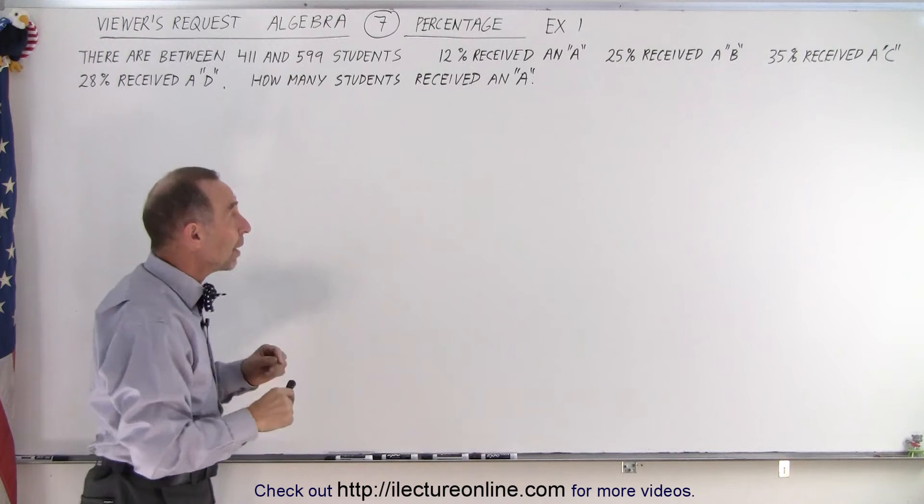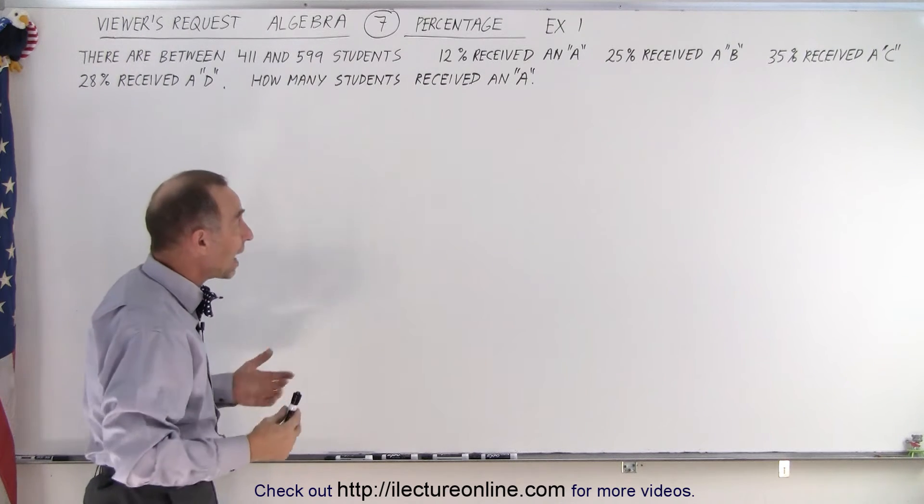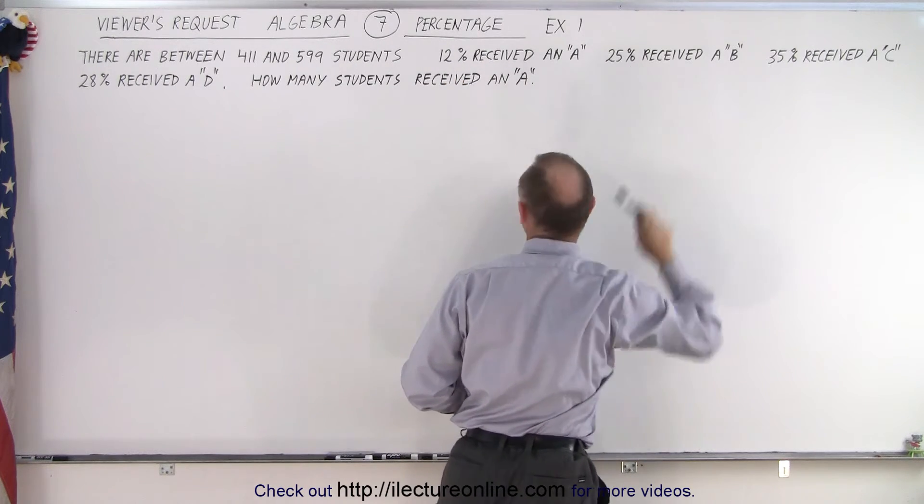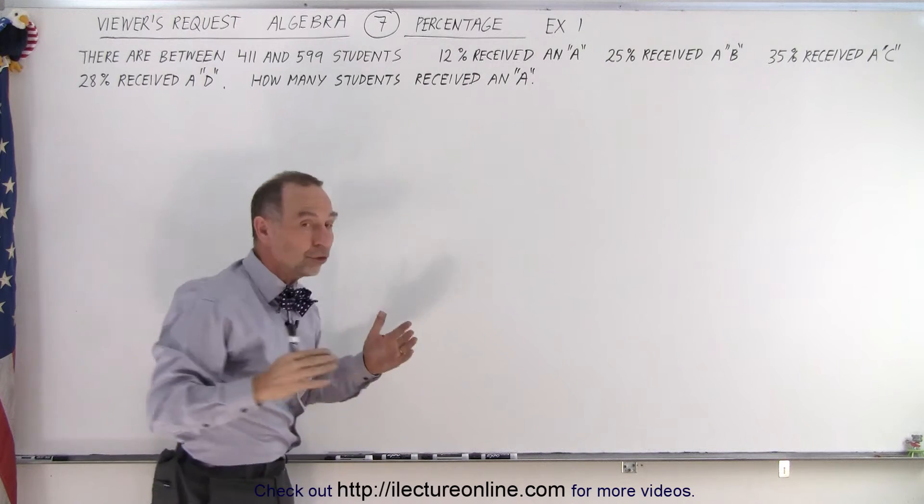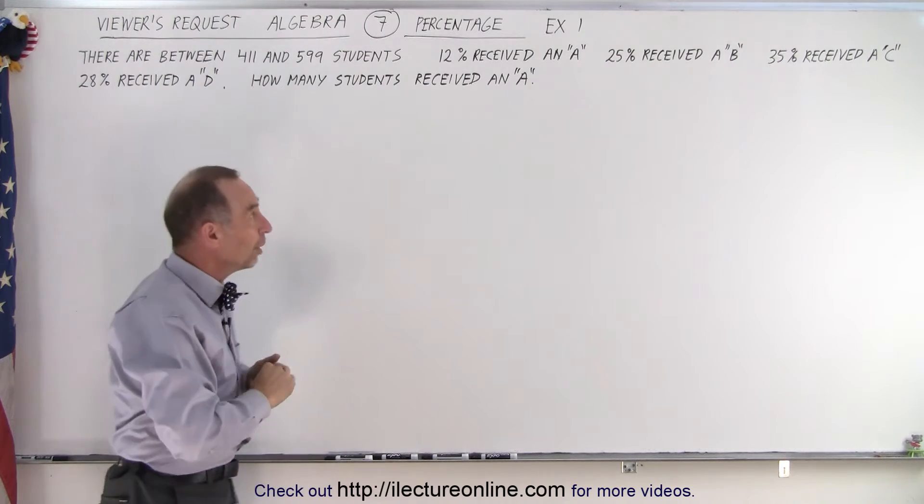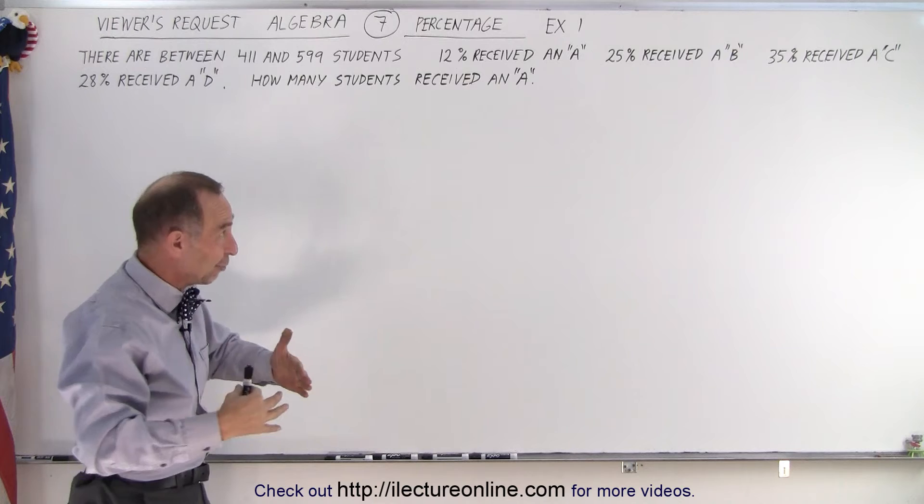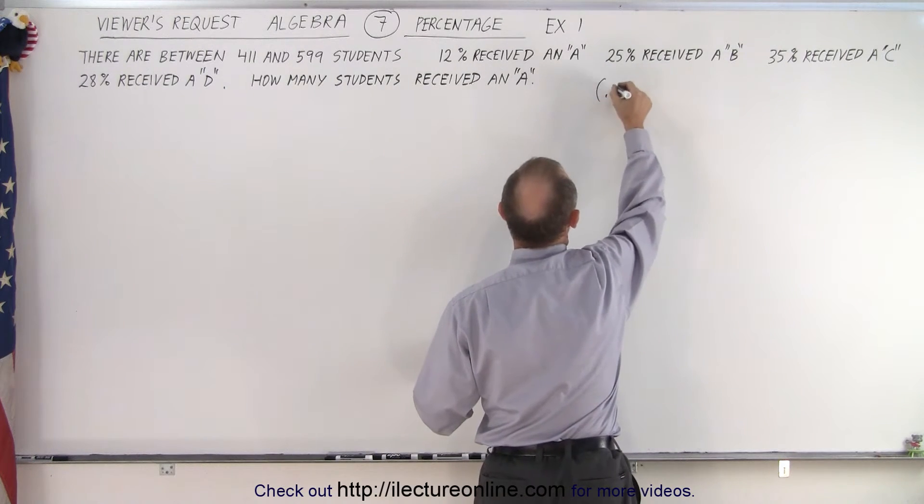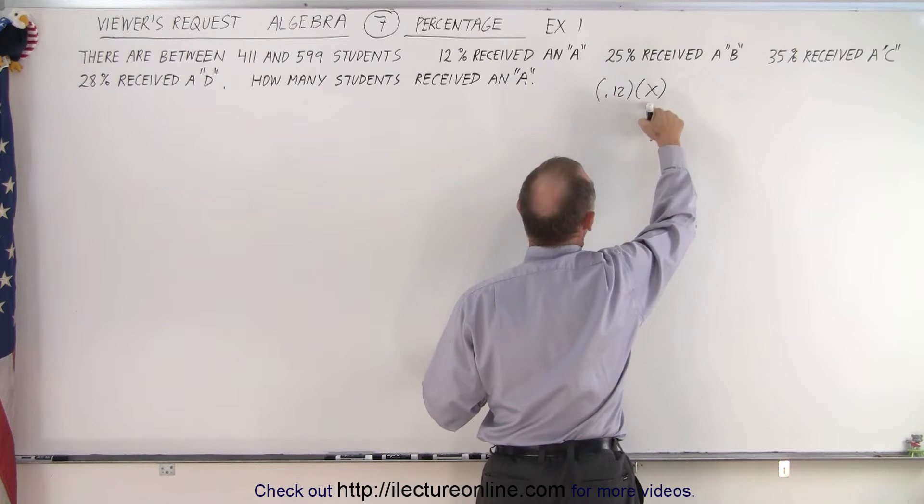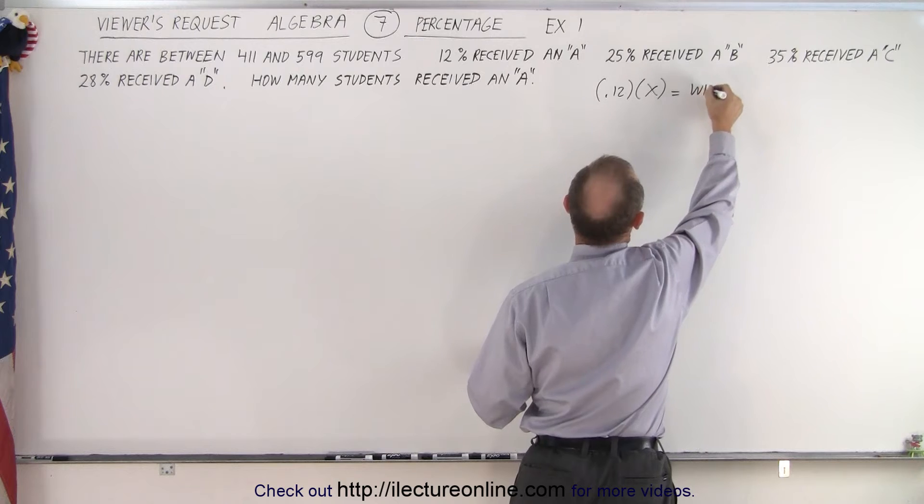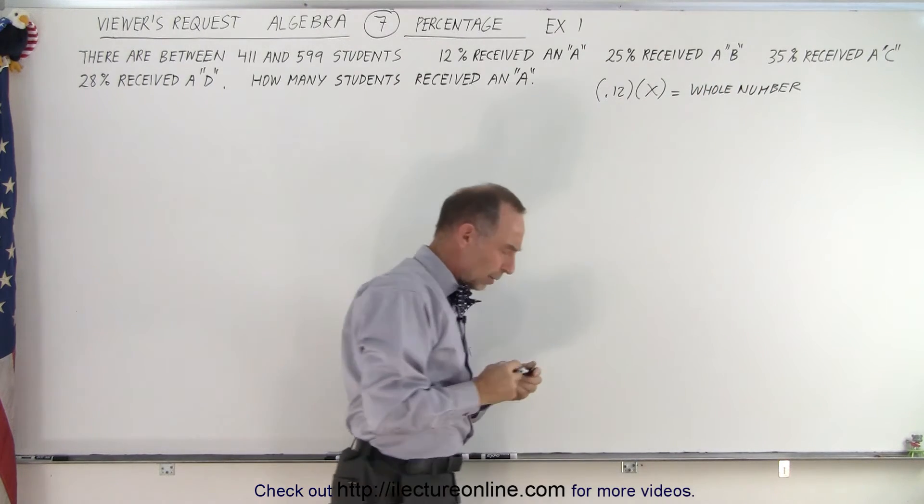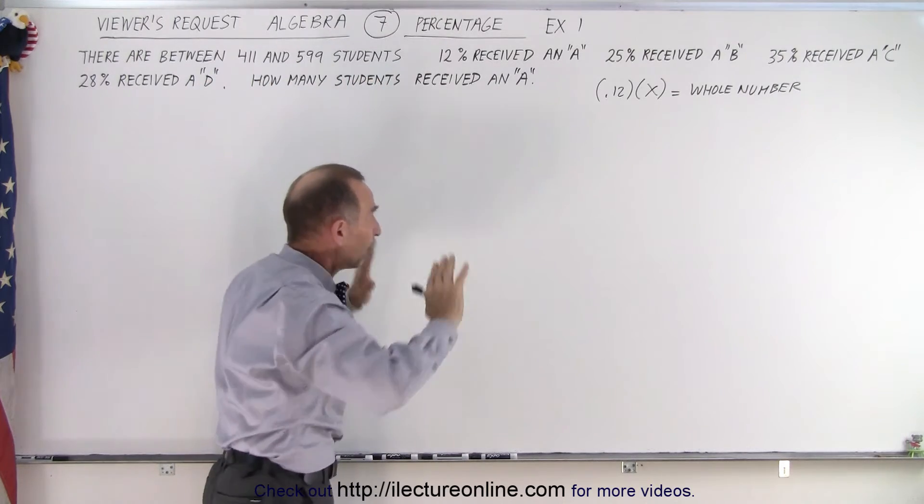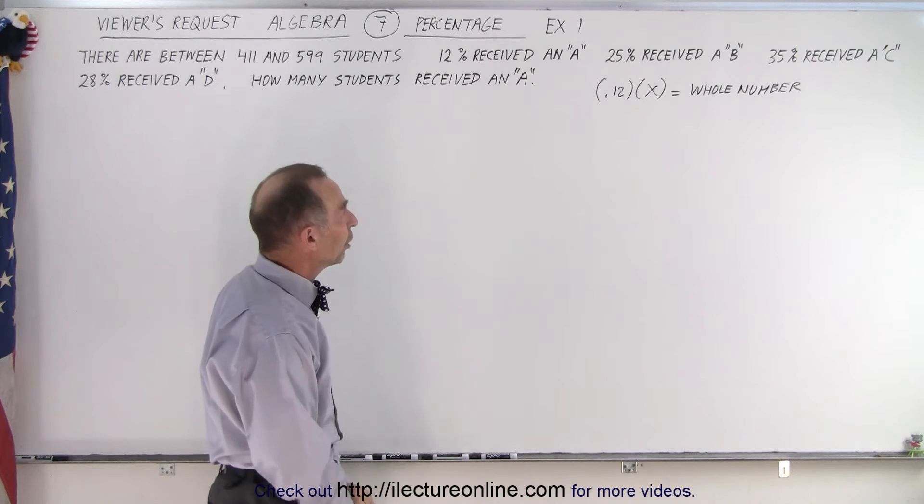The trick to this particular problem is to realize that whatever the number of students is that we have, when we take 12% of those, 25% of those, 35% of those, and 28% of those, all of those numbers must be a whole number, because you can't have a fraction of a student. Which means that when we multiply 0.12 times x, x being the total number of students we have, must equal a whole number. So what does x need to be? Let's not worry about the range right now, but just what's the smallest number x can be where you end up with a whole number.